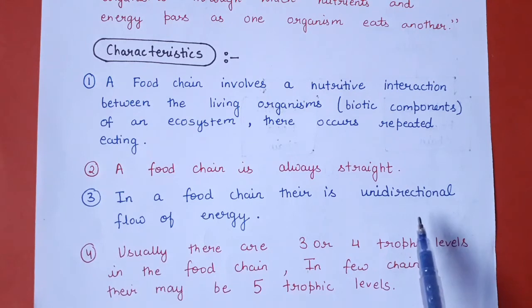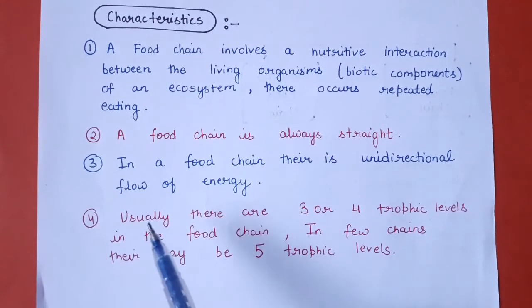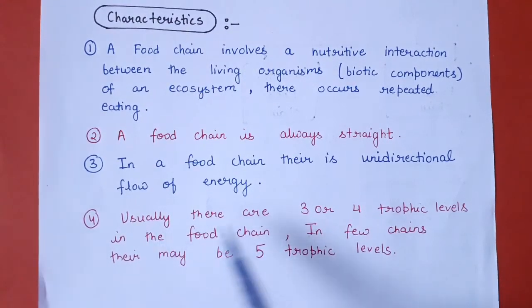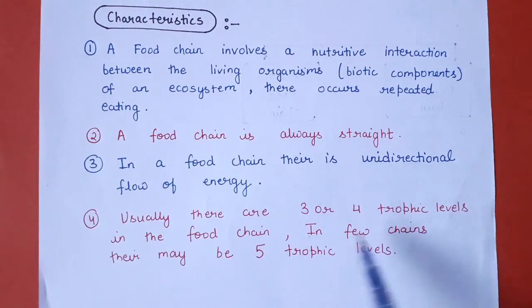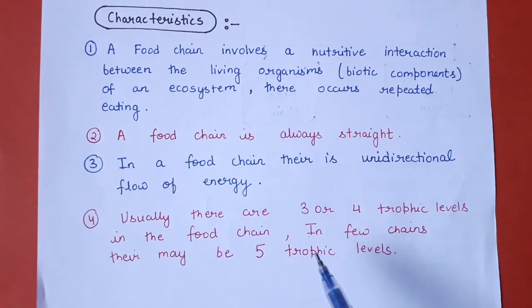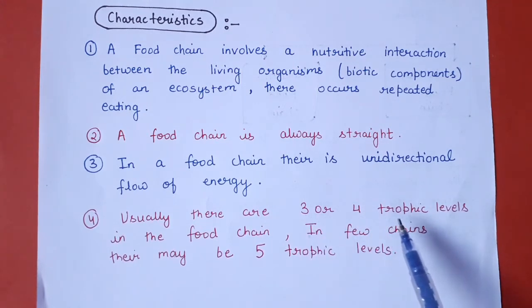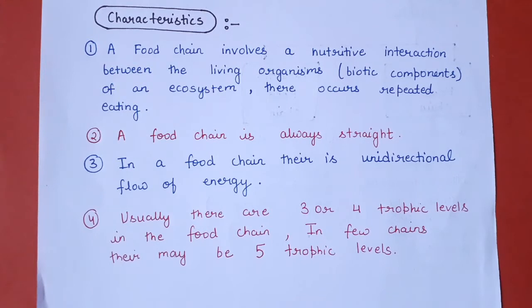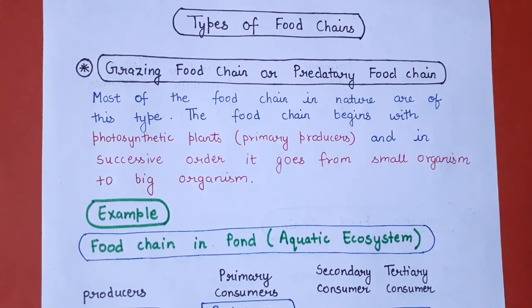Usually there are three or four trophic levels in a food chain; in few cases there may be five to six also. Zyadatar cases mein jo trophic levels hoti hain woh aapko 3 se 4 dekhne ko milengi, but kuch cases mein aapko 5 ya 6 bhi trophic levels dekhne ko mil sakti hain. Trophic levels ke baare mein hum detail mein pichhle video mein discuss kar chuke hain.